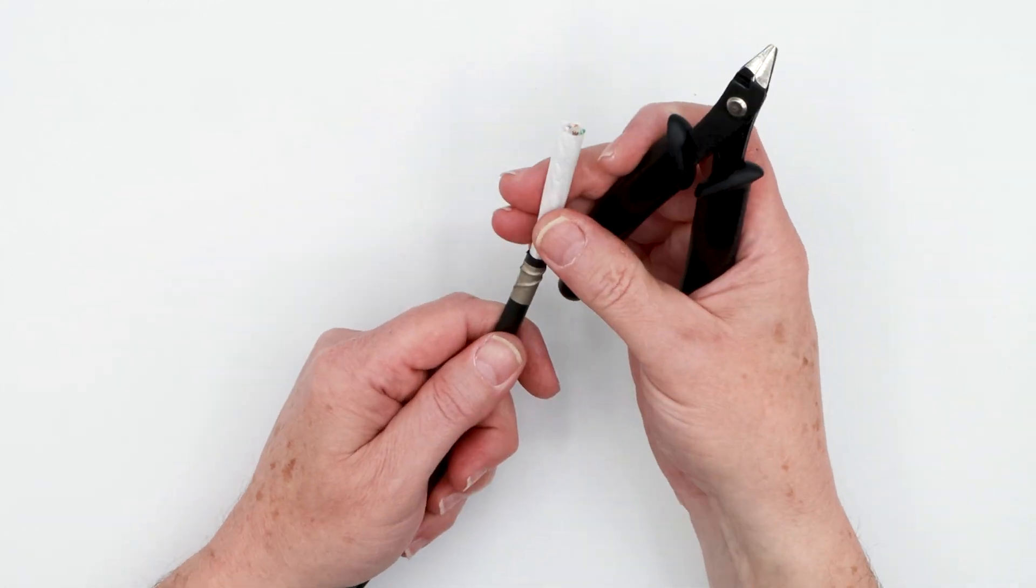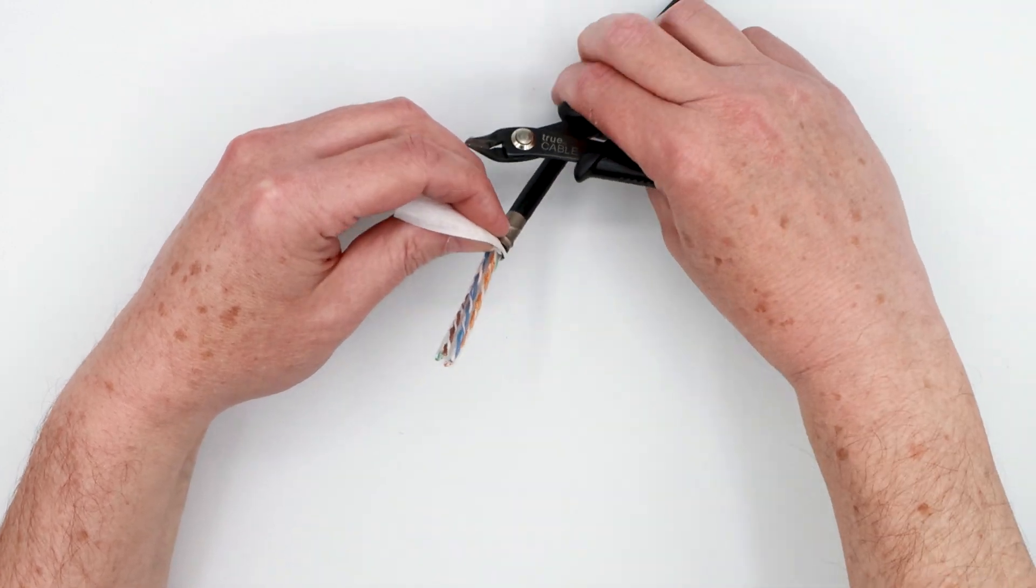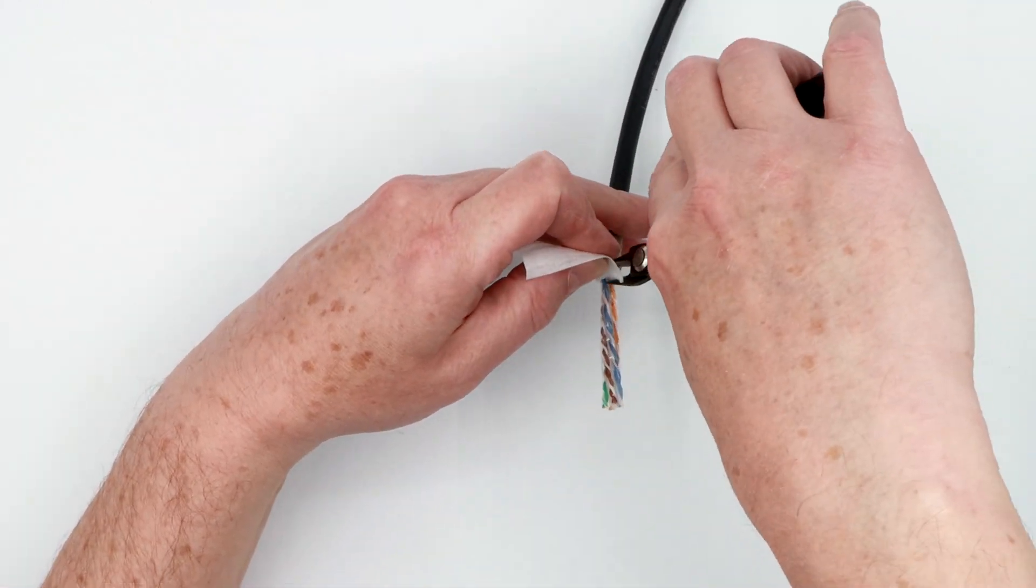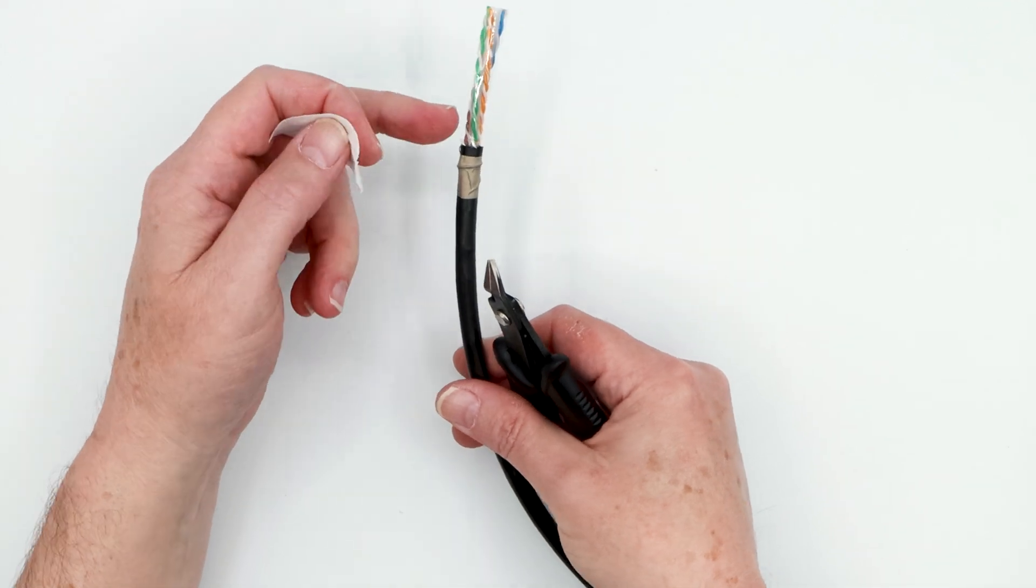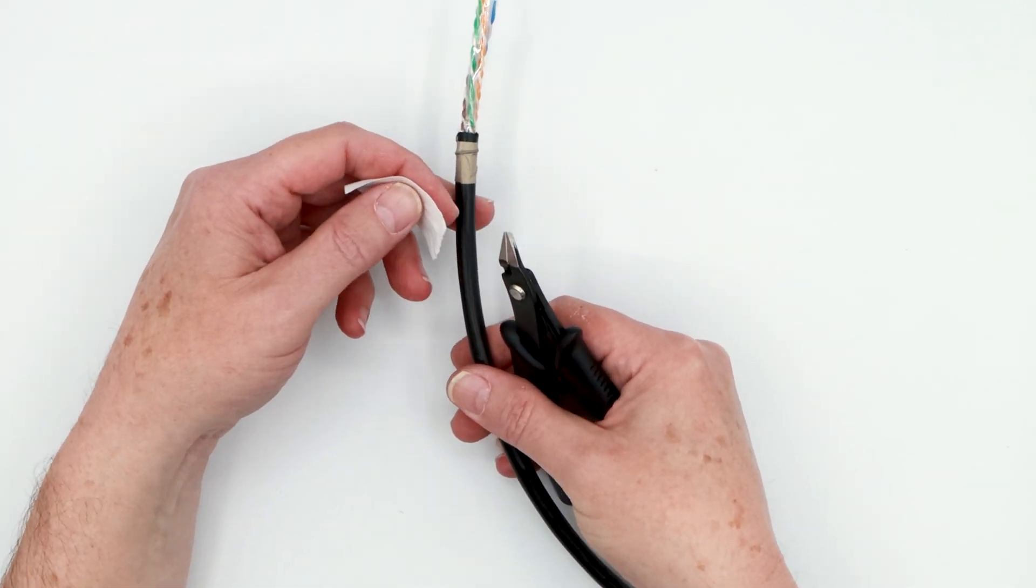The next step is you've got this waterproof tape. Start cutting at the very edge of the jacket all the way around. It's important that you get as much off as possible. The more of this waterproof tape you leave on the more difficult your termination is going to be.